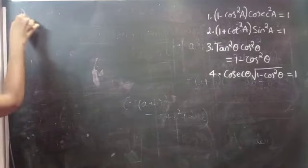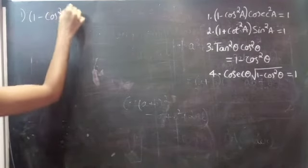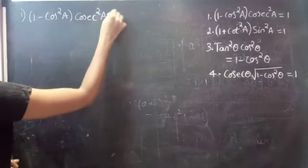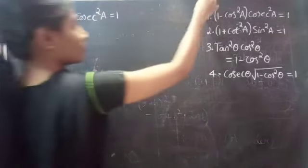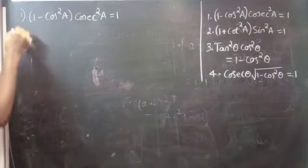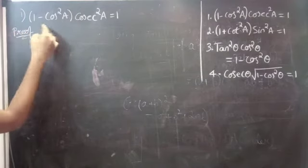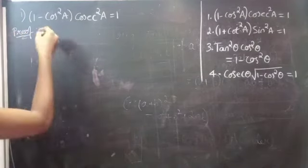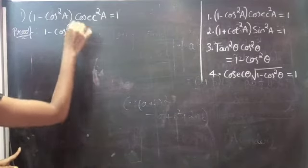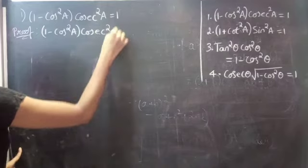First one: prove that (1 - cos²A) · csc²A equals 1. So now we are going to consider the LHS part: (1 - cos²A) · csc²A.